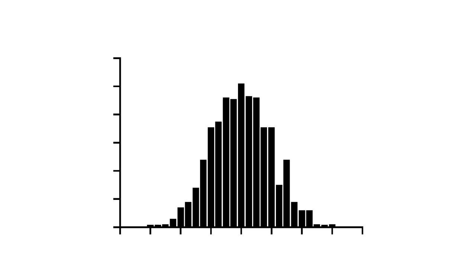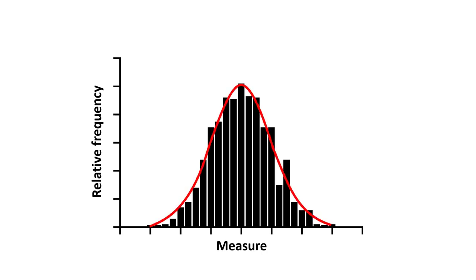When reading about a normal distribution, you probably came across a graph that looks something like this. This histogram is a frequency distribution that resembles a normal distribution. The y-axis represents the relative frequency, whereas the x-axis represents a certain measure. And because of its distinctive shape, it is often referred to as a bell-shaped curve, since it looks like a bell shape when plotting a non-linear regression line, as shown in red.